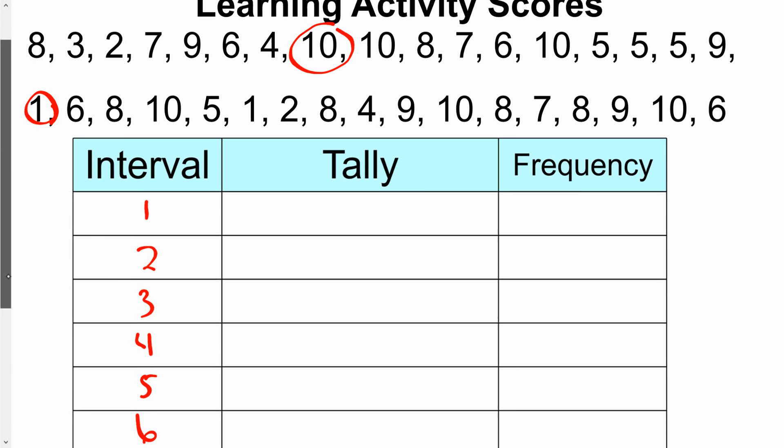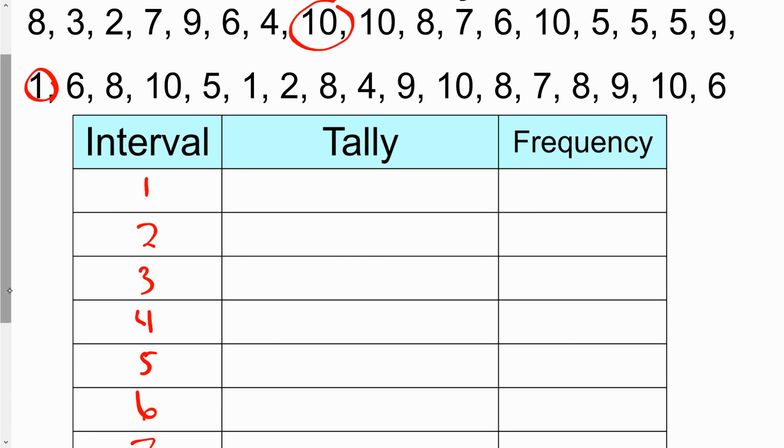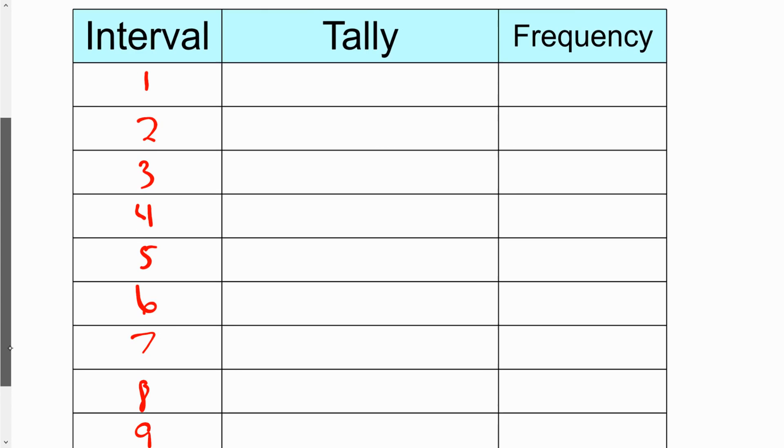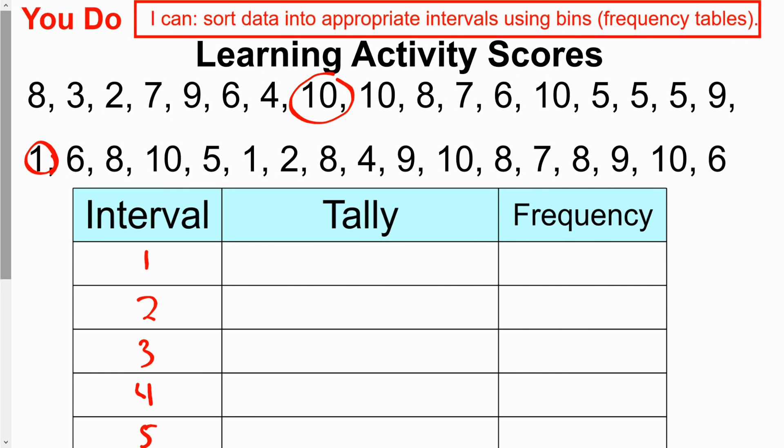And we're going to start looking at, in a second, how do we shrink how many intervals we have, so you don't have to do one for each interval. So go ahead and pause the video and get this data in there. Hopefully you paused the video. Don't try to get away with that. It's best to practice it and then see if you got it right. I'm going to move through this part pretty quickly. So try to keep up if you can.